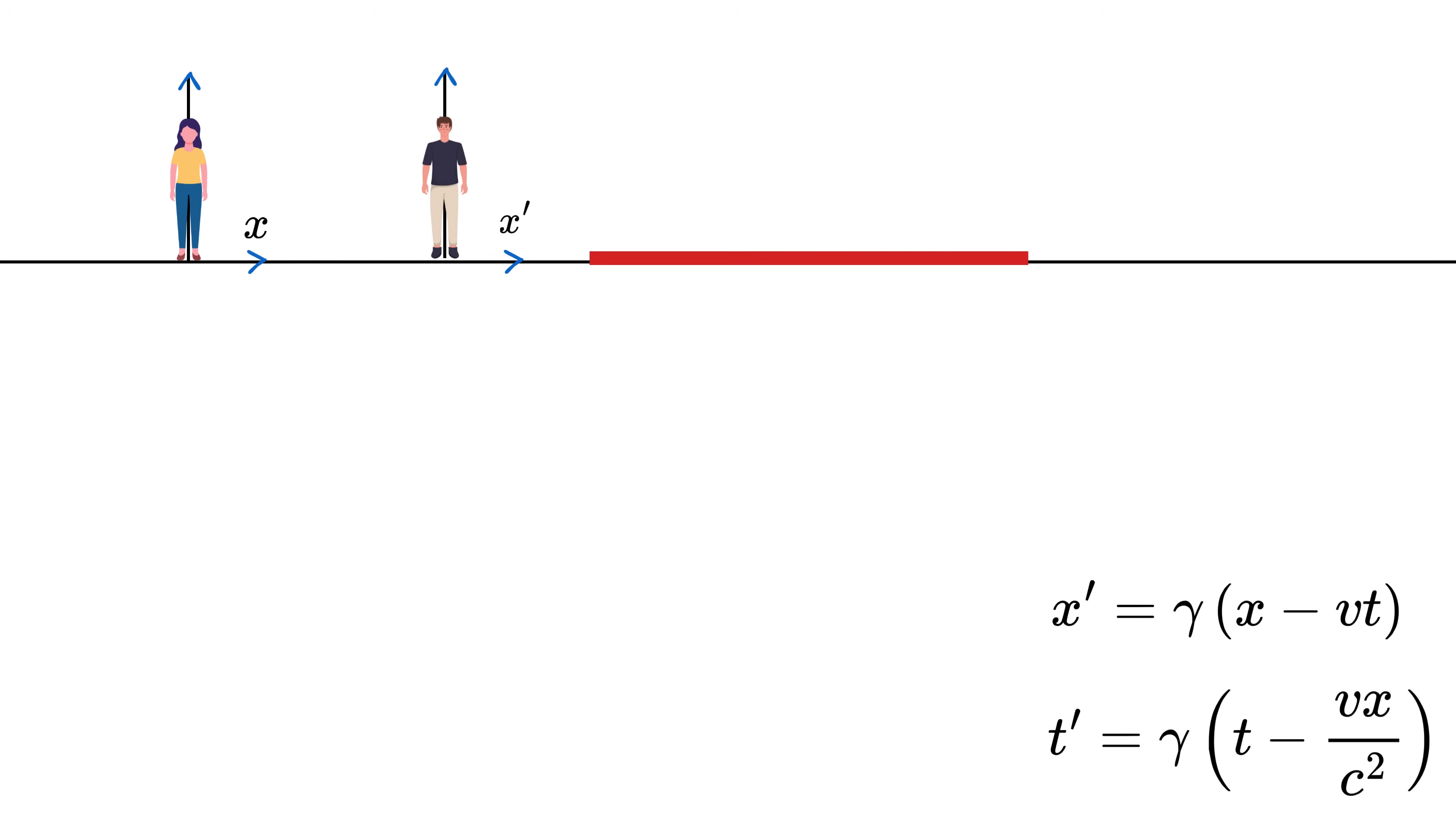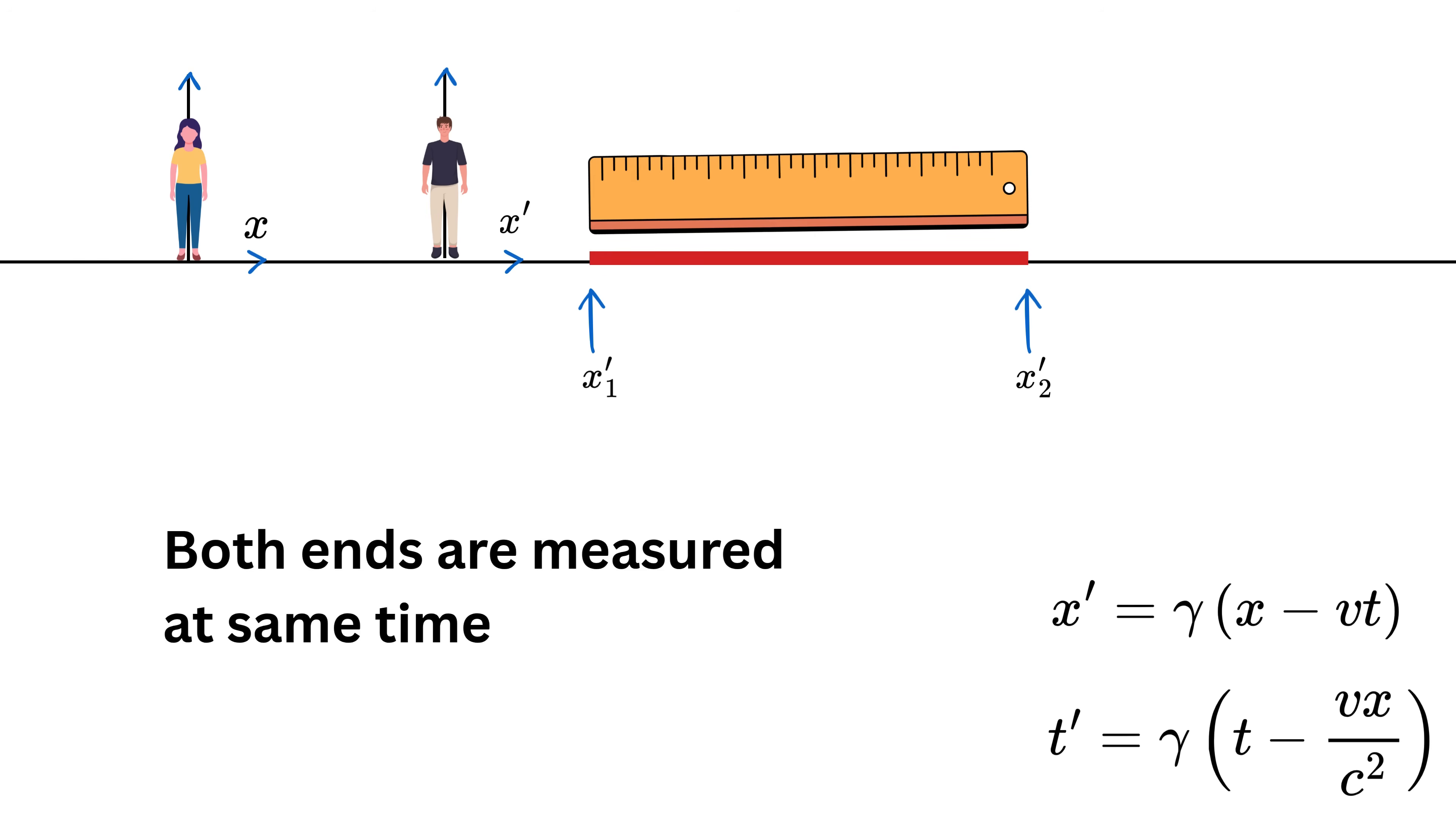Say the left end of the pole is at x one prime and the right end of the pole is at x two prime. Since Bob is holding the pole at rest with respect to the pole, the event for both ends is measured at the same time.